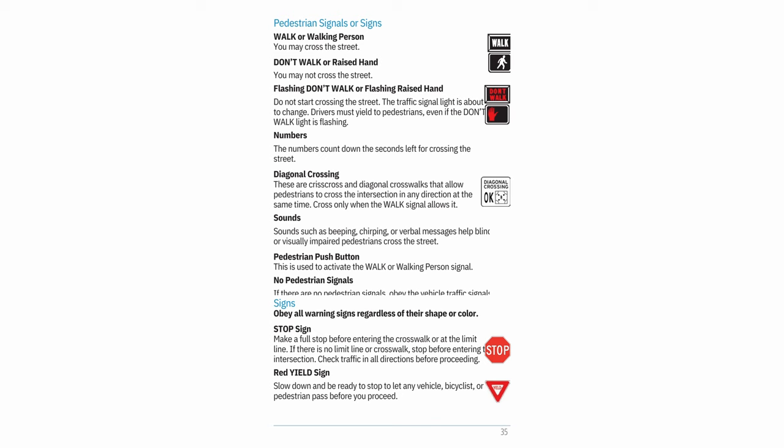Pedestrian signals: Walk or walking person — you may cross the street. Don't walk or raised hand — you may not cross the street. Flashing don't walk or flashing raised hand — do not start crossing; the traffic signal light is about to change (drivers must yield to pedestrians even if the don't walk light is flashing). Numbers — count down the seconds left for crossing. Diagonal crossing — crisscross and diagonal crosswalks allow pedestrians to cross in any direction at the same time; cross only when the walk signal allows. Sounds (beeping, chirping, or verbal messages) help blind or visually impaired pedestrians cross. Pedestrian push button — activates the walk signal.